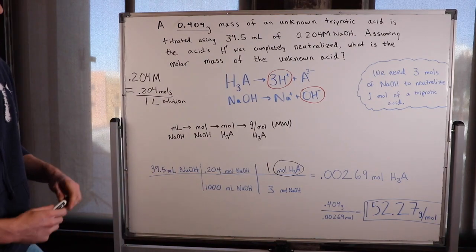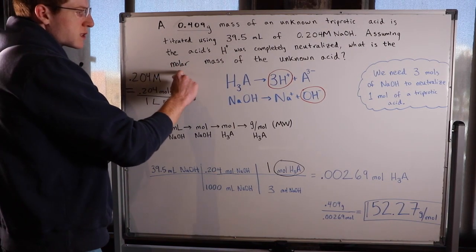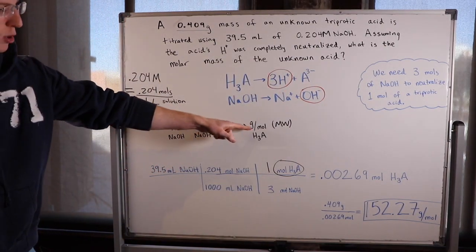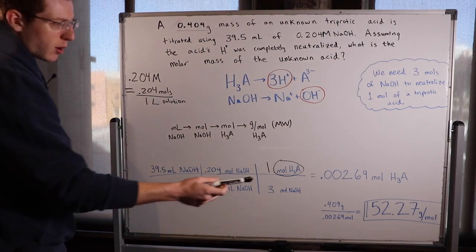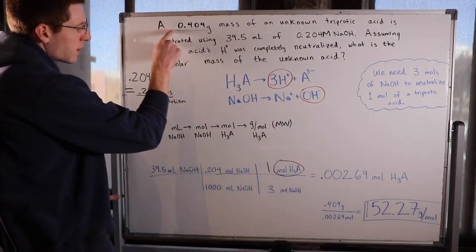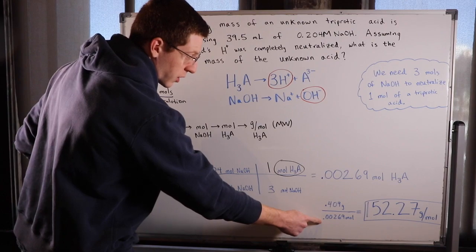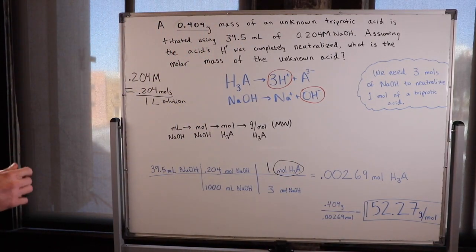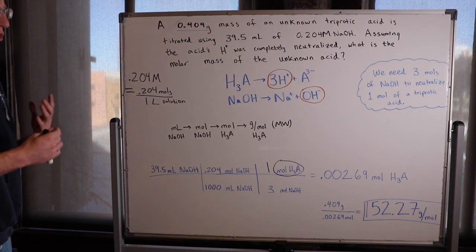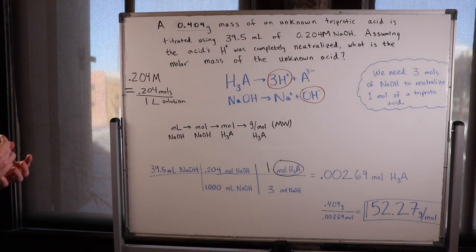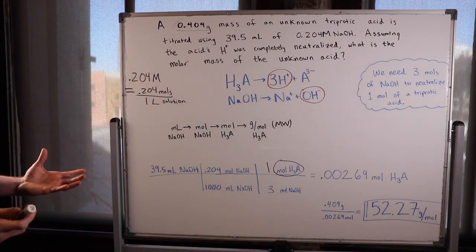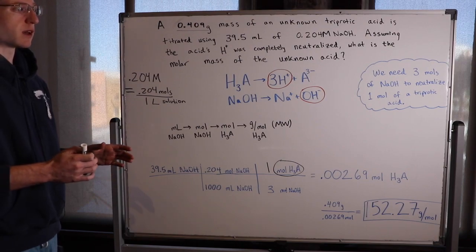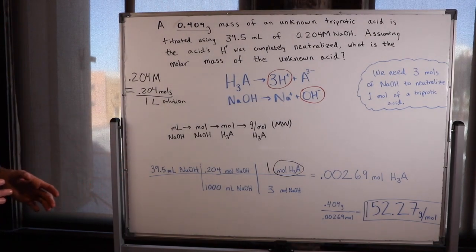They asked for the molar mass of the unknown acid, so we need grams per mole. We have moles now and they gave us 0.409 grams, so dividing grams by moles gives 152.27 grams per mole — that is the final answer. It's a tricky problem asking for something a bit unusual, but it relies on the same principles. I hope that helped. If you have any questions, please contact me at facebook.com/denovotutoring. See you in the next video.